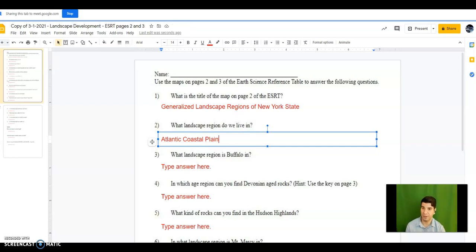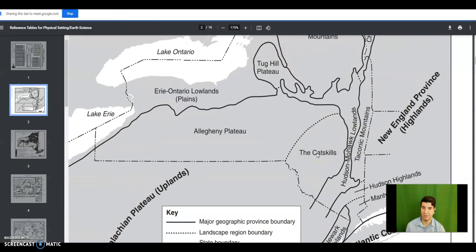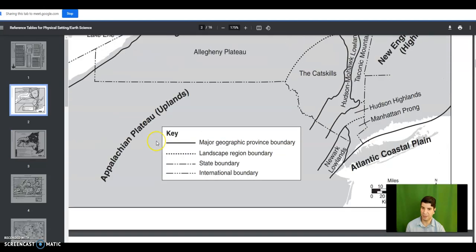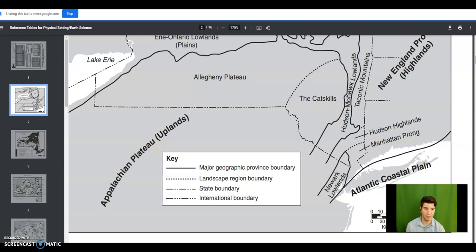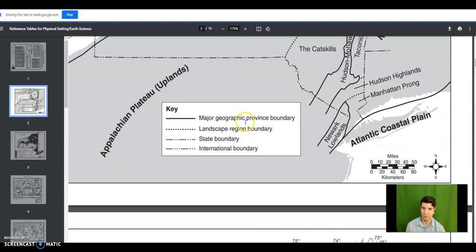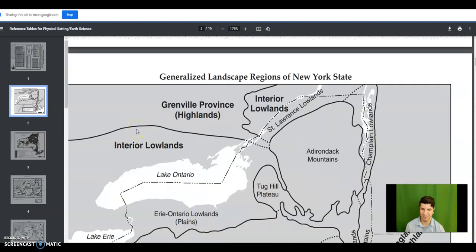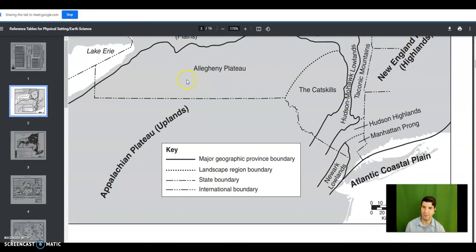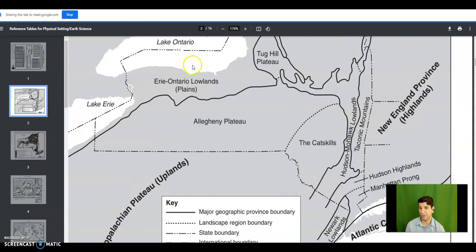What landscape region is Buffalo in? So let's find Buffalo. Okay we're not looking on that map, we're looking on this one on page three. So I don't have to see it but there's Buffalo. Buffalo, so Buffalo is just at the tip of Lake Erie. So let's go back to this page, let's find Lake Erie. My computer froze. Come on you can do it, went too far that time. So the Erie Ontario Lowland.